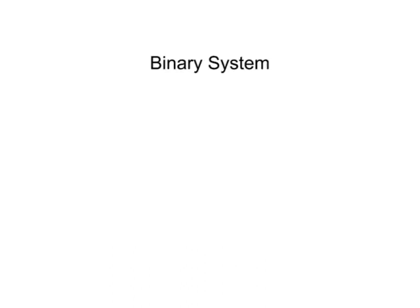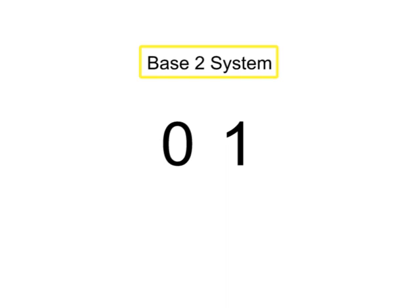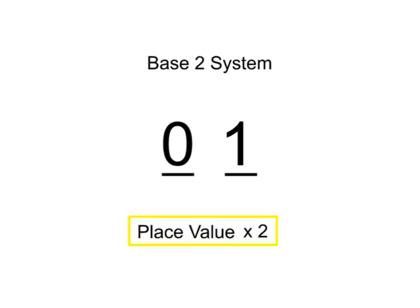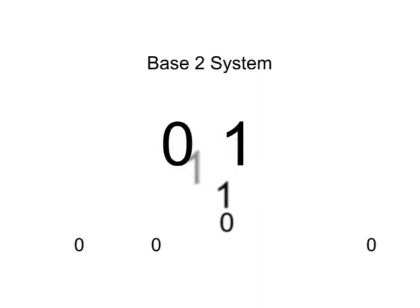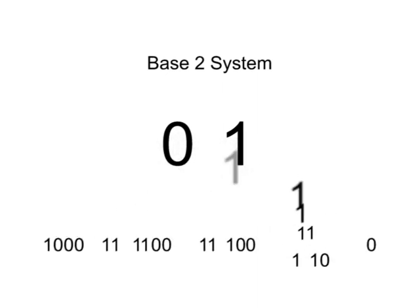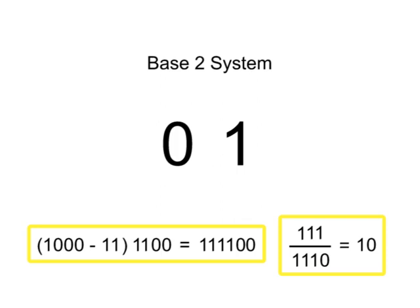The binary system also uses place value to determine the magnitude of a number, but uses only 0 and 1 as numeric symbols. Thus, it is referred to as the base 2 system with each position incremented by a multiple of 2. Digital systems use the base 2 system for computational operations in many of its applications.